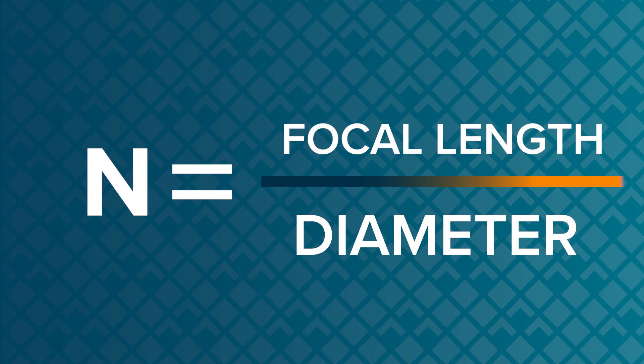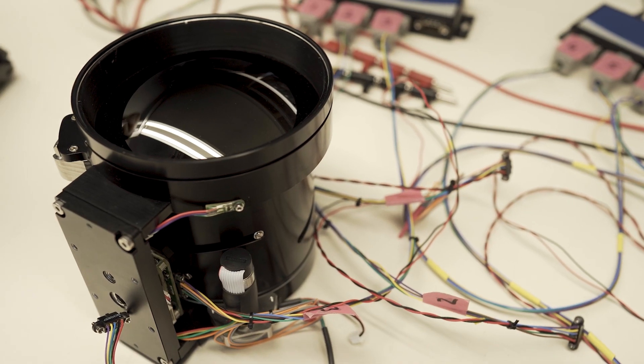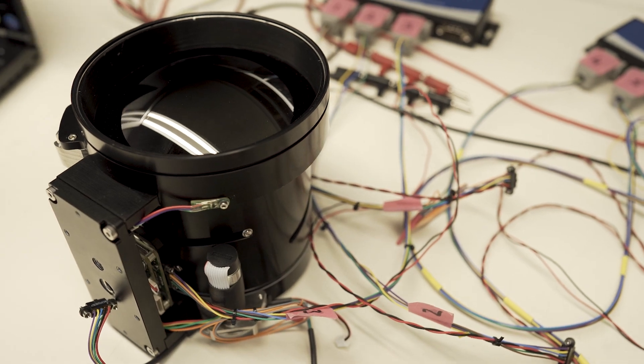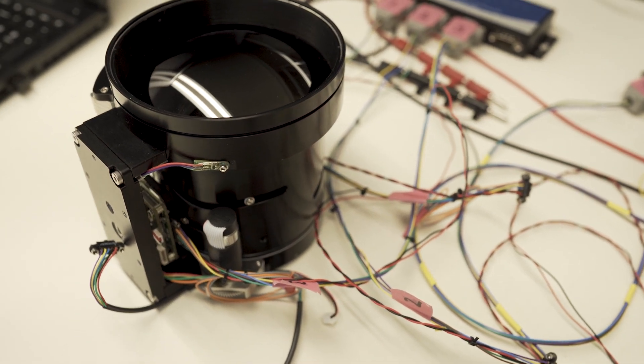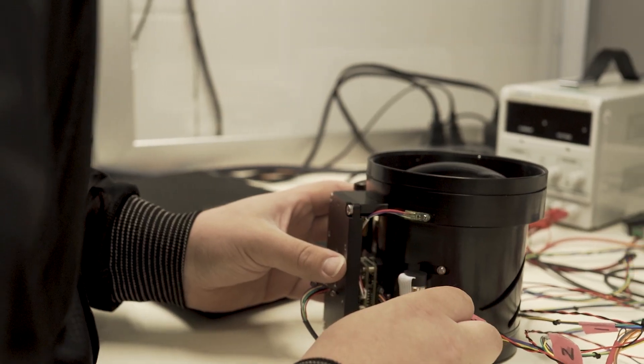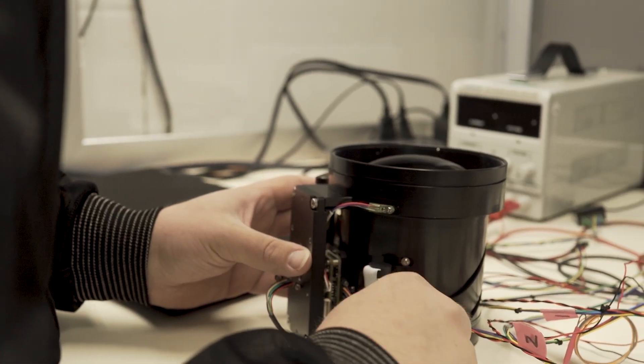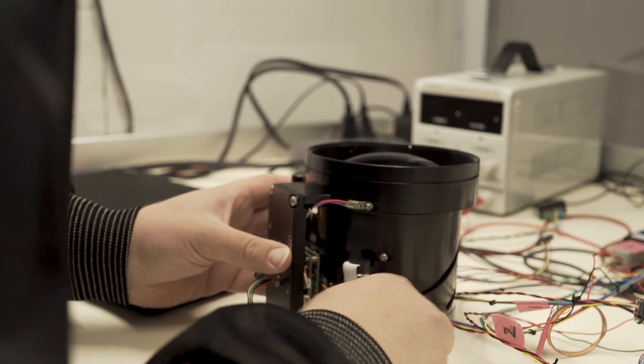If you think about a lens with an F number of one, that means the diameter of your lens is equivalent to the focal length. So if you have a 300 millimeter focal length lens, you have a 300 millimeter diameter lens.